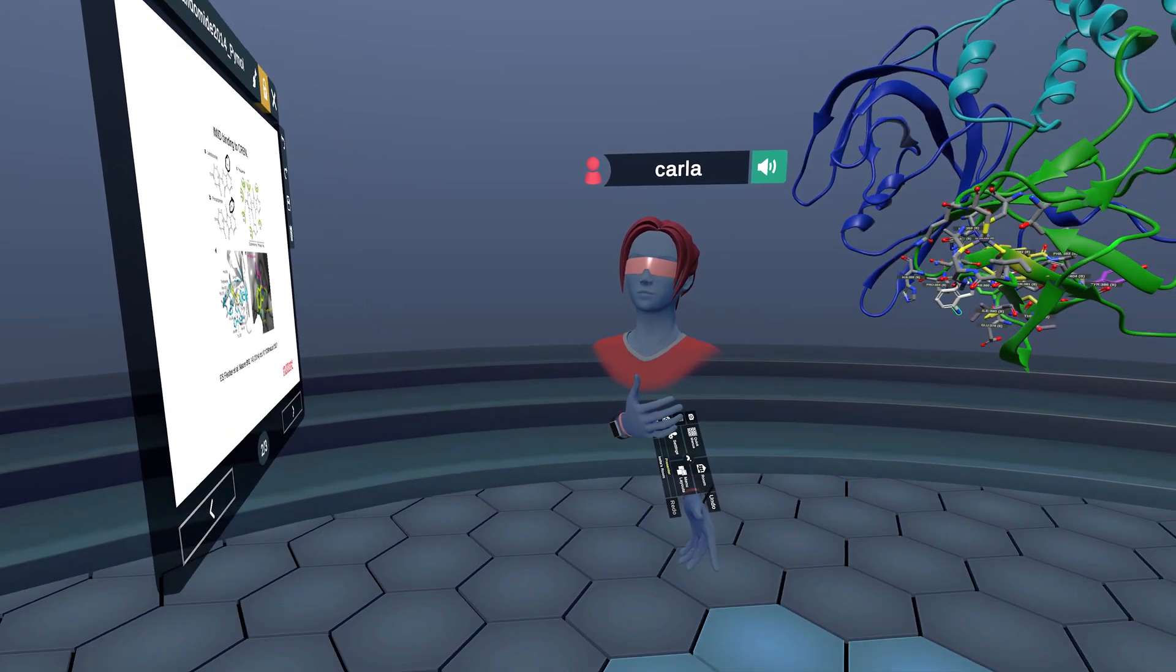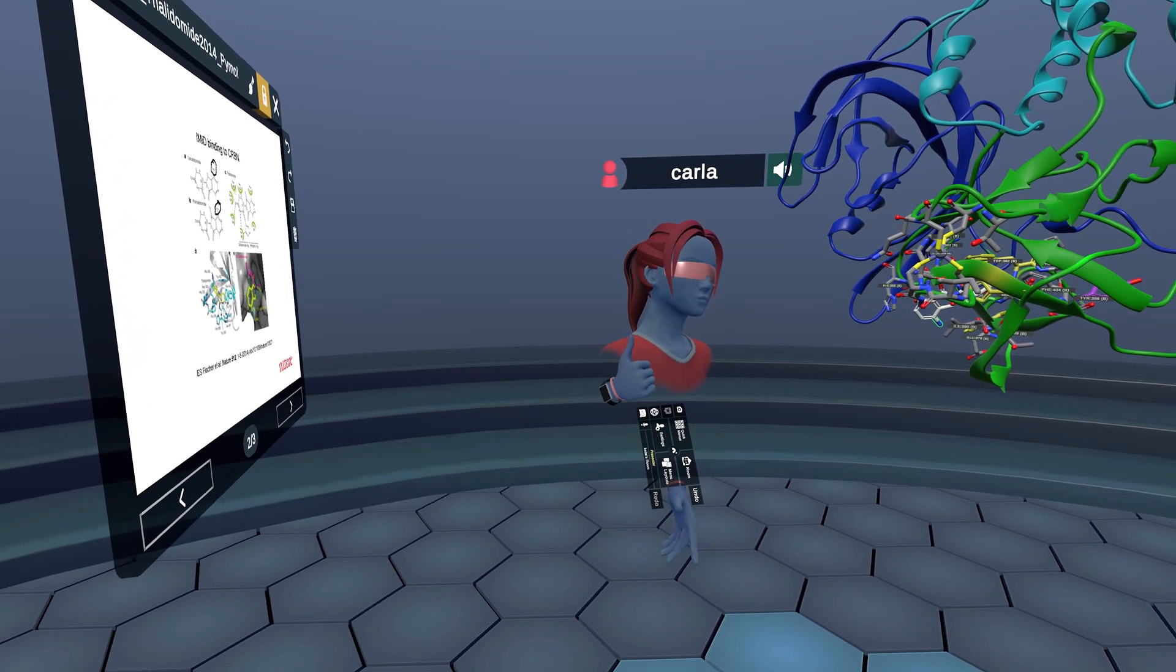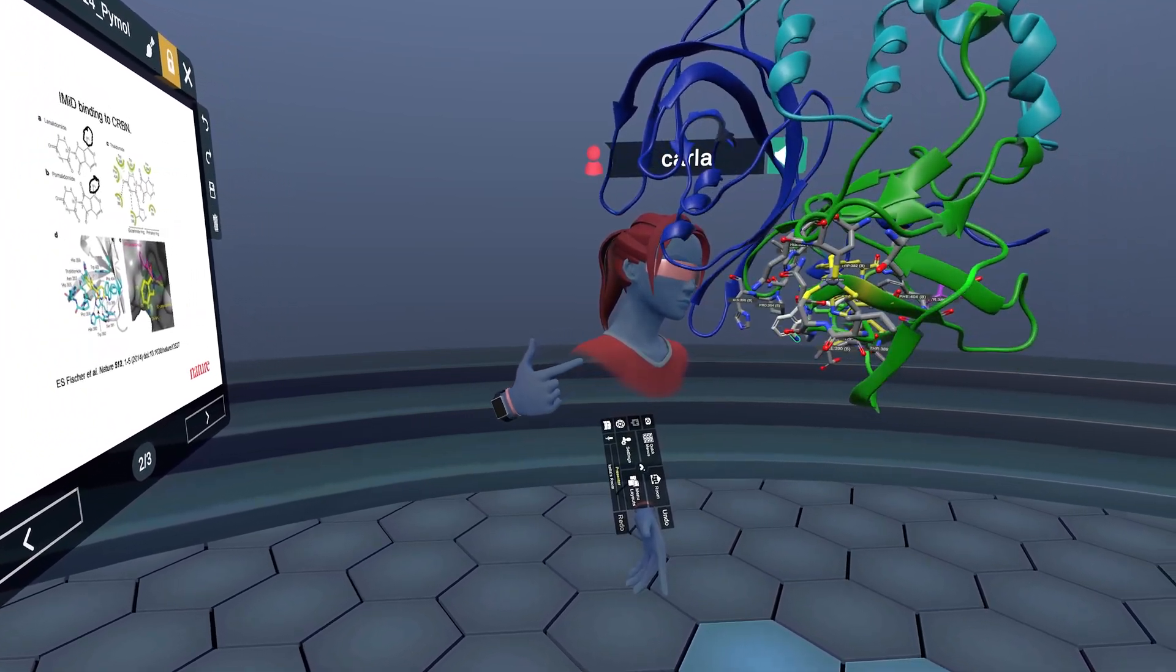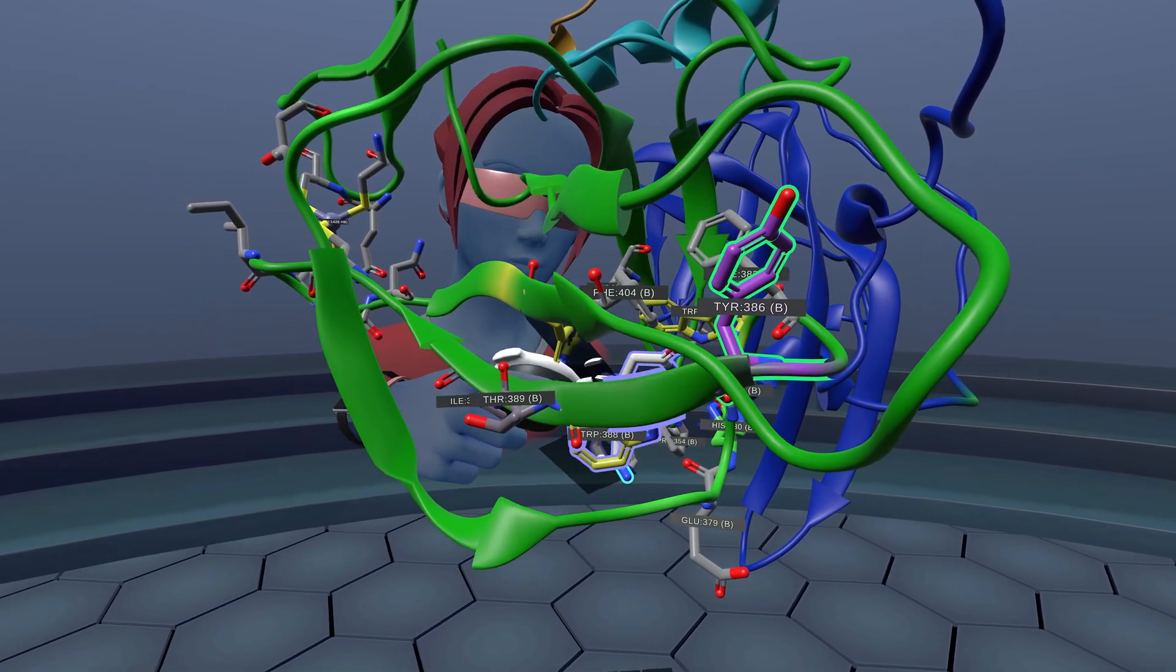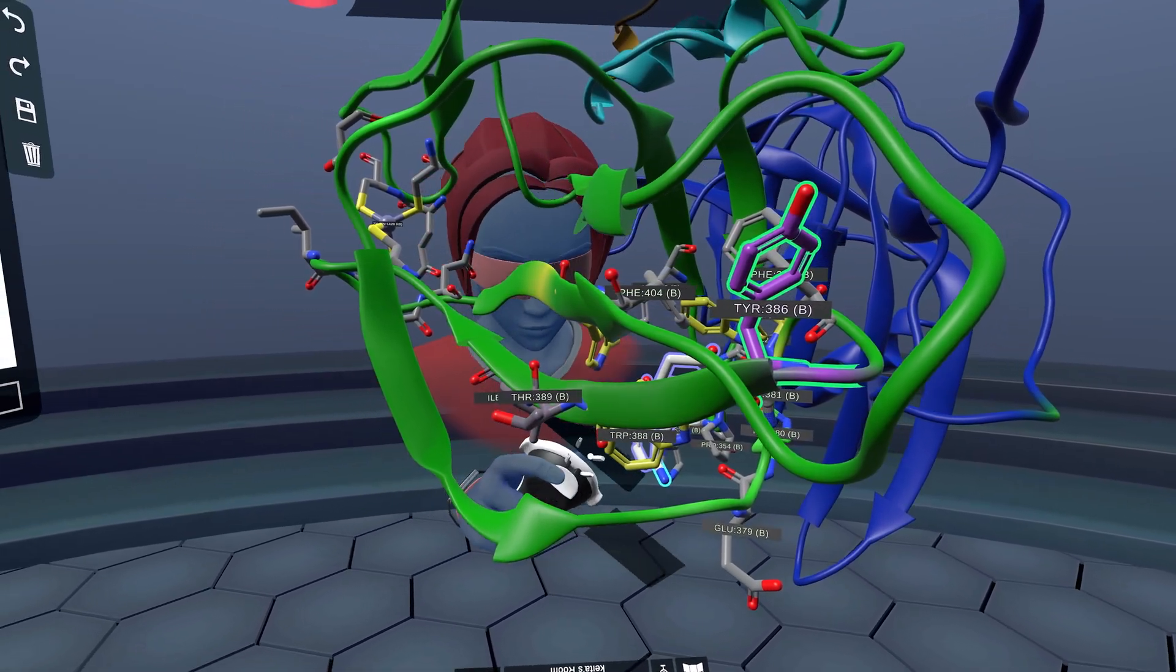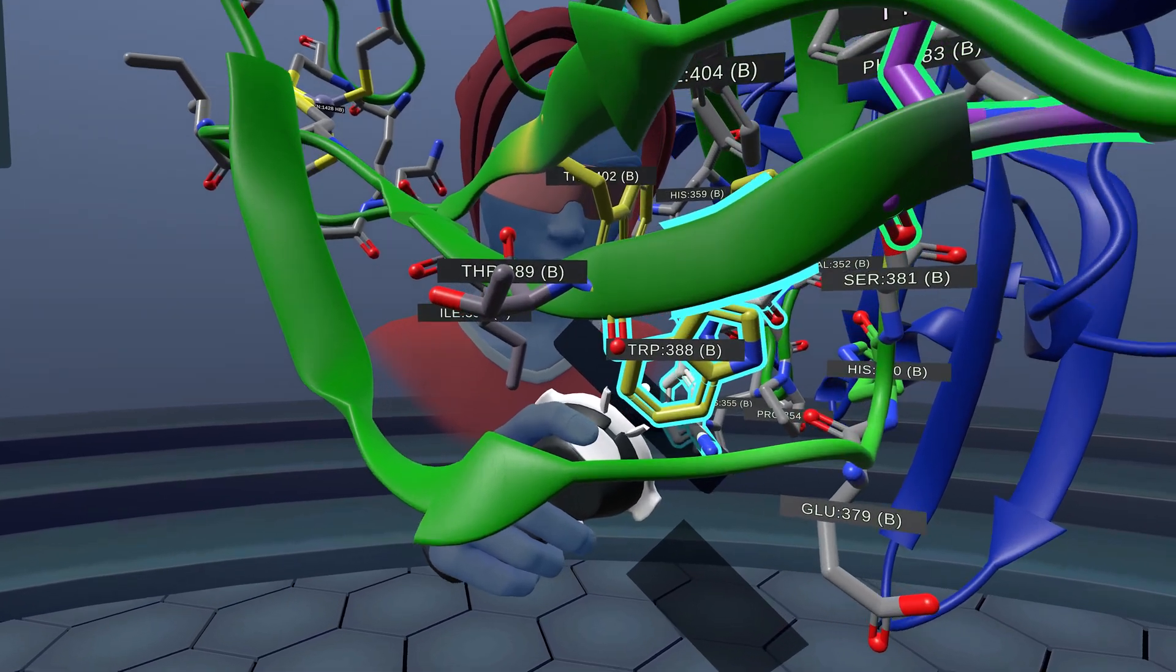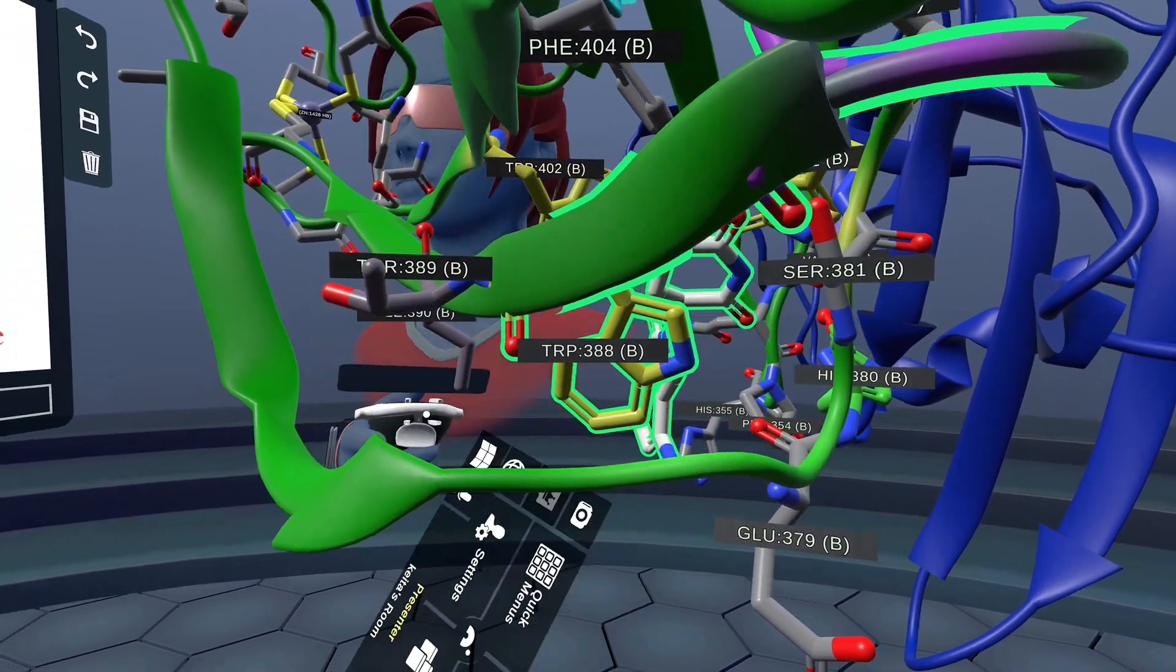Mutations that abrogate binding of all IMIDs are the tyrosine 368 to alanine, which in this binding pocket I've highlighted in purple in the back, and also, perhaps more apparently, the tryptophan 388 will also abrogate binding.